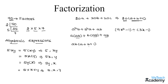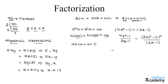Thus we can write the algebraic expression in a simpler form. Now let us move on to the next algebraic expression: (9x² − 1) ÷ (3x − 1). We can write this as (3x)² − 1² divided by (3x − 1). In the numerator, (3x)² − 1² is in the form of a² − b², which is given by (a + b)(a − b).